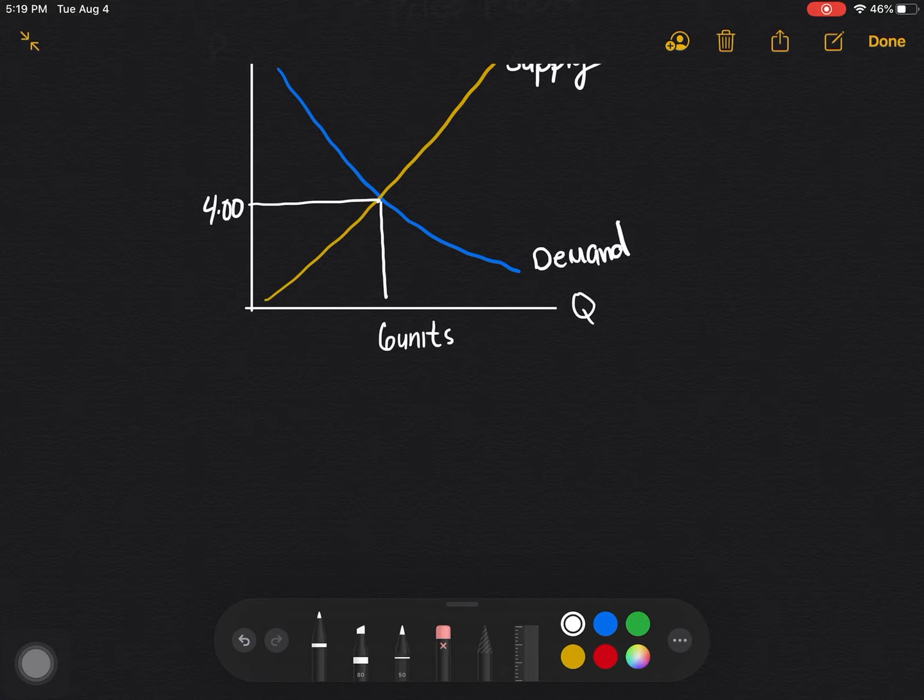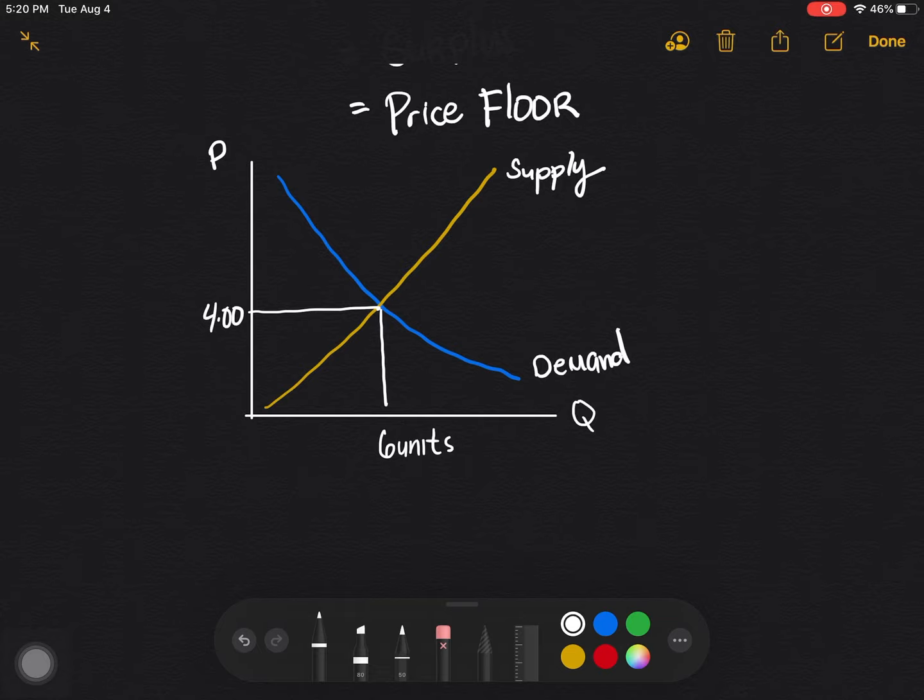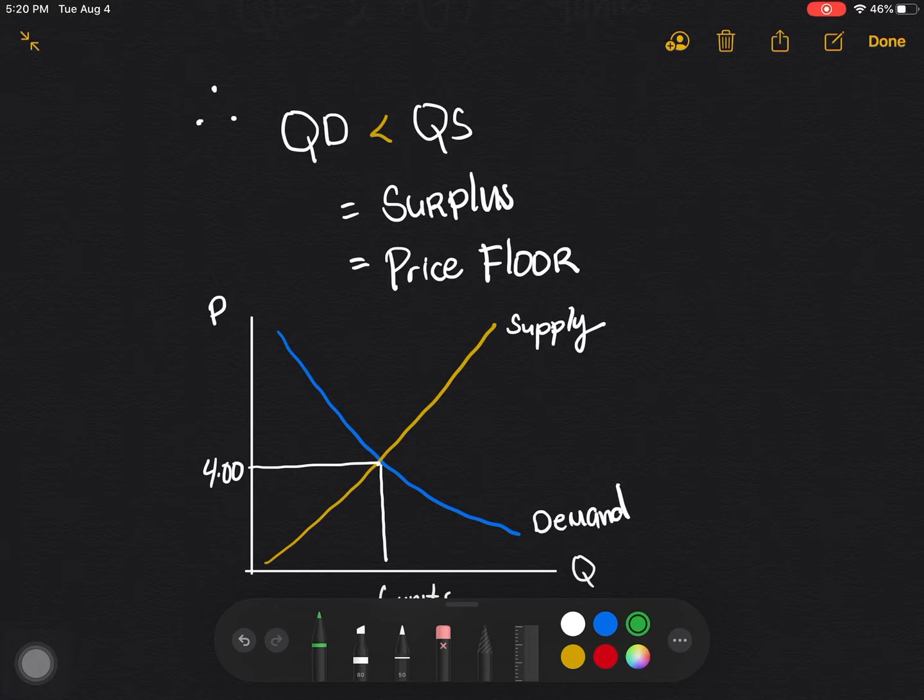Perhaps the government looked at the quantity supply and demand wherein they found out that the price is actually very low. So they said that they are planning to set the price at 7 pesos. So the government is the one who sets the price. So let's just say that the government sets the price here. So from 4, the price now is 7 pesos.